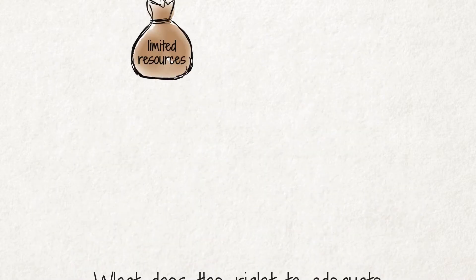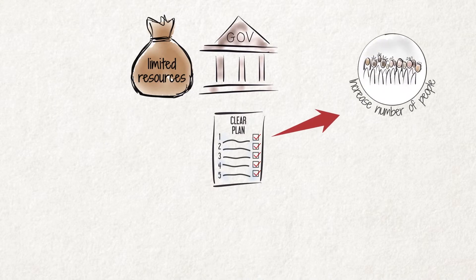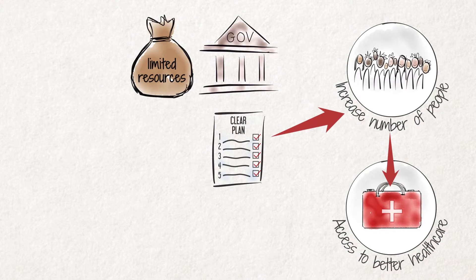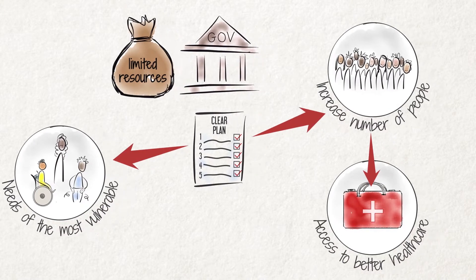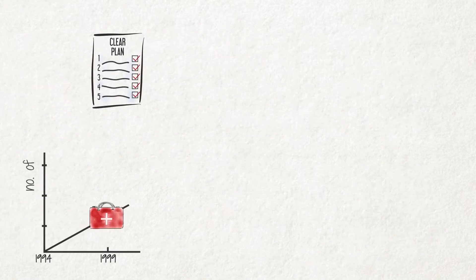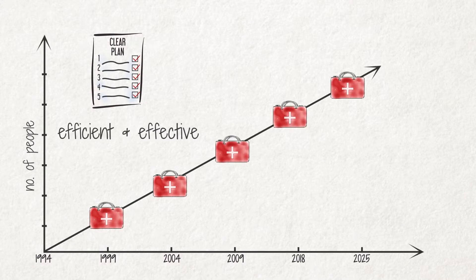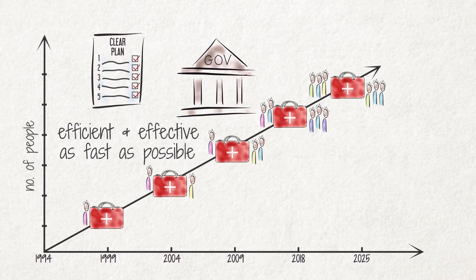Even with limited resources, the state must have a clear plan on how it will increase the number of people that have access to better quality health care services. This plan must also address the needs of the most vulnerable people in society, and must be implemented in an efficient and effective manner. The state must move as fast as possible towards the long-term goal of ensuring that everyone has access to quality health care services.